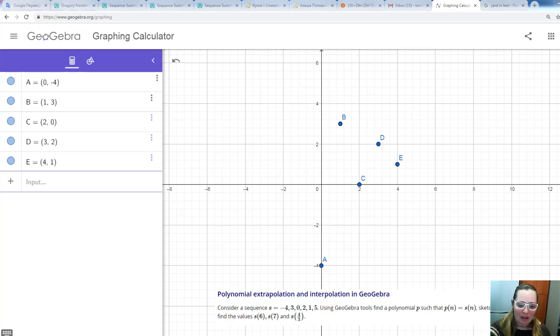First of all, let's consider the example when we are given a sequence S, the following sequence. And the first thing that we do, we need to enter this data into GeoGebra. And how we enter the data?